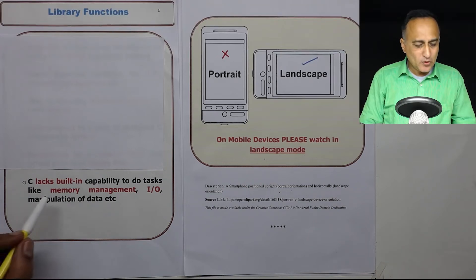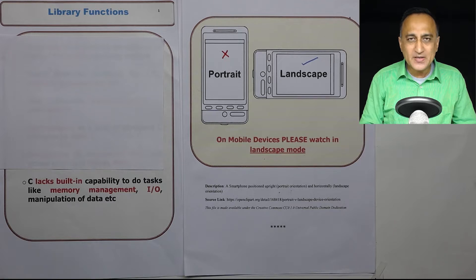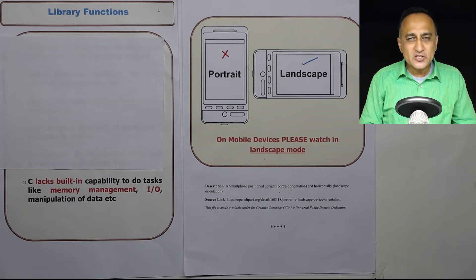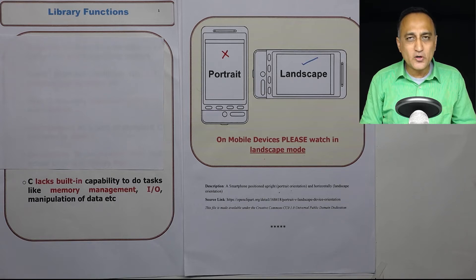Some languages have a built-in capability to help the user perform input/output, manage memory, and manipulate data as part of the language itself. C language takes a slightly different approach — instead of making things like printf and scanf part of the C language, it uses a library's help. So C does not have anything on its own to read and write; it takes the help of a library and using the library functions it gets things done for you.